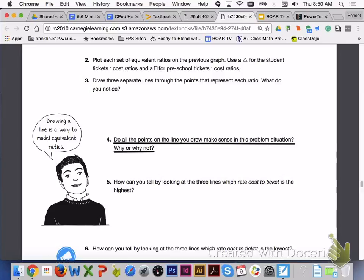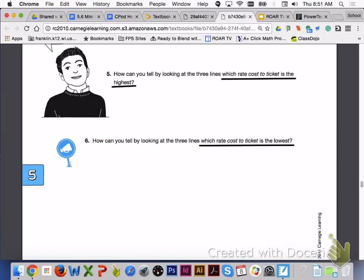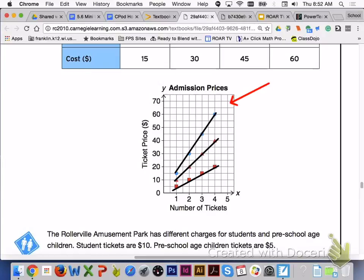Please answer number 4 with your group members. For number 4, the line that you drew in this problem situation does not make sense, because you cannot buy a fractional part of a ticket. Please answer number 5 and number 6 with your group members. For number 5, the steepest line is going to show the highest ratio of cost to ticket, which would be the adult example. And for number 6, the flatter line is going to show the lowest ratio for cost to ticket, which is the preschool age example.